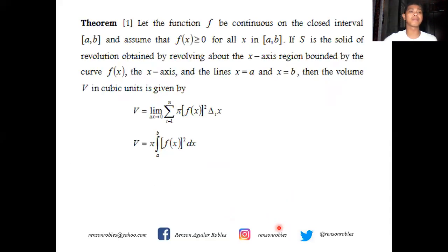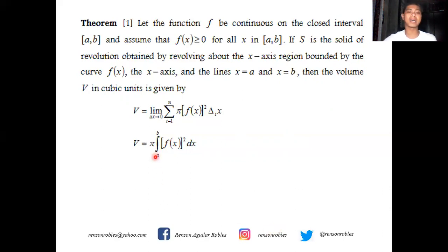This leads us to the following theorem. If f is continuous on the closed interval [a, b] and f of x is greater than or equal to zero for all x in [a, b], and if S is the solid of revolution obtained by revolving the region bounded by f of x, the x-axis, and the lines x equals a and x equals b above the x-axis, then the volume V in cubic units is given by V equals pi times the integral of f of x squared dx from a to b. Note that the axis of revolution is the x-axis and is also one of the boundaries.